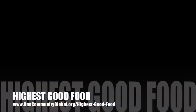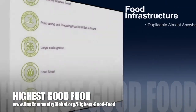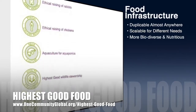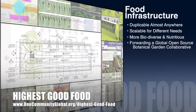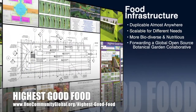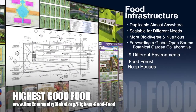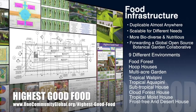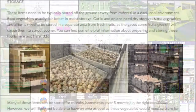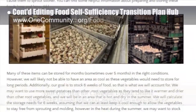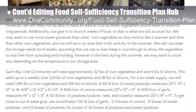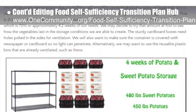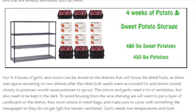One Community's approach to highest good food is duplicable almost anywhere, scalable for different needs, more biodiverse and nutritious, part of forwarding a global open source botanical garden collaborative, and includes nine different free shared and duplicable growing environments. This week the core team continued editing the Food Self-Sufficiency Transition Plan hub page and the Food Bars page, and calculated the storage space needed for root vegetables as shown here.